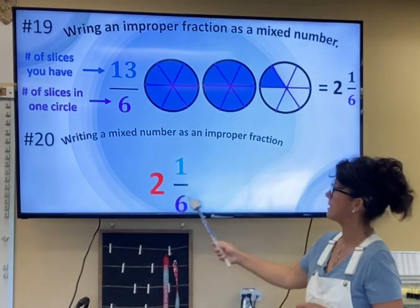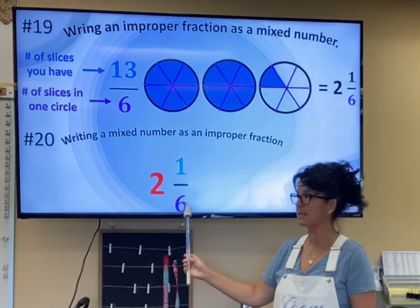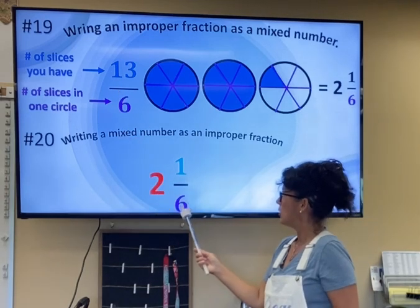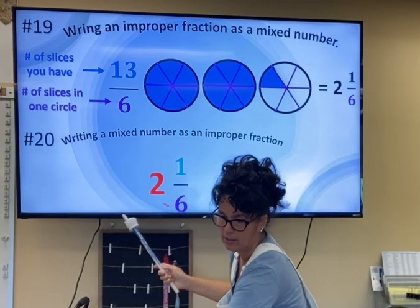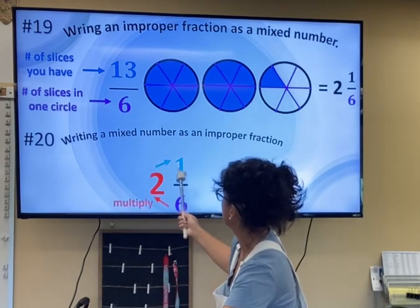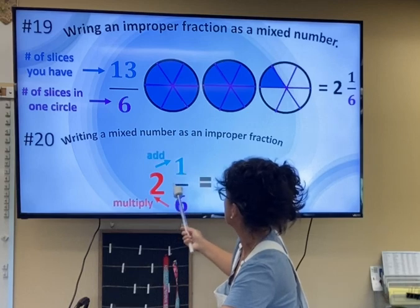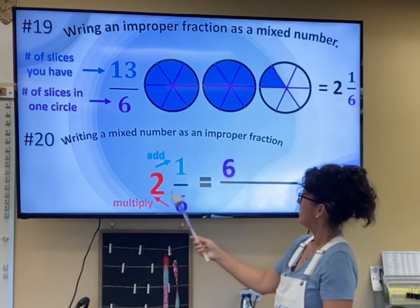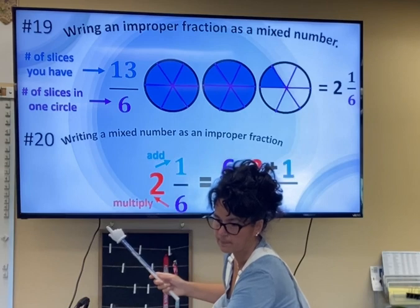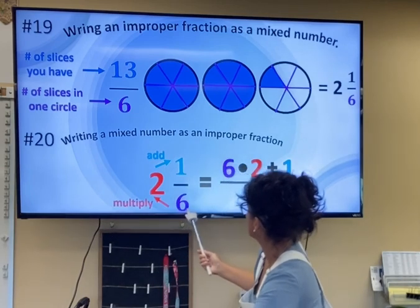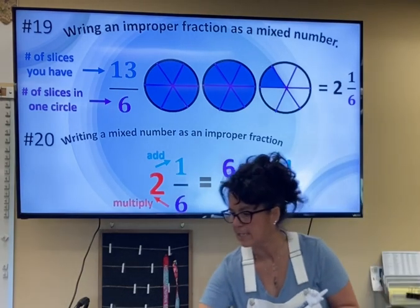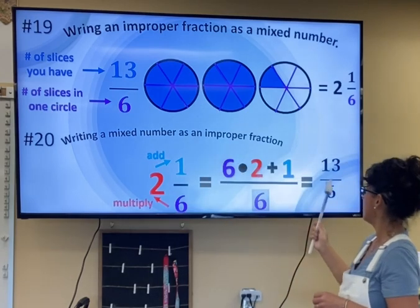If you want to go backwards — let's say I'm starting off with the mixed number 2 and 1/6 and I want to turn it back into an improper fraction — then you can multiply the denominator times the whole number, and then add the numerator. So 6 multiplied by 2, then add 1, all over the same denominator. 6 times 2 is 12, and 12 plus 1 is 13, so we're back to an improper fraction.